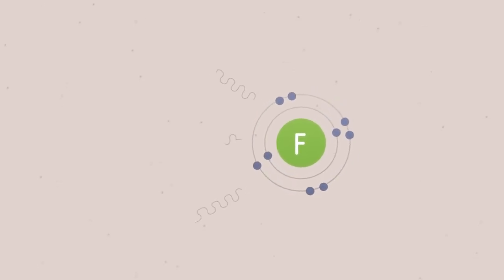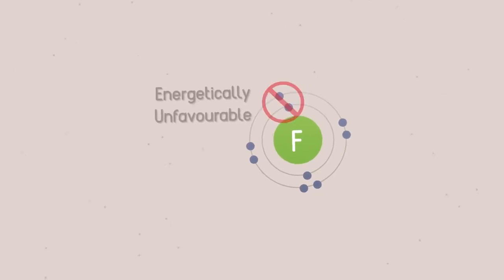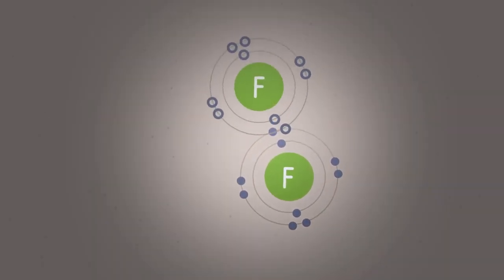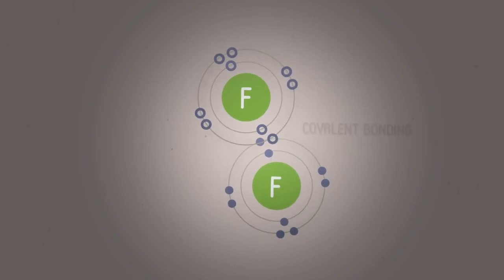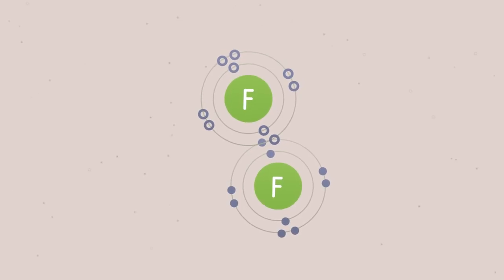They have shells of electrons that are normally half or more than half full of electrons. Since they have a strong attraction for a few additional electrons, it is energetically unfavourable for them to lose electrons. So they share electrons by overlapping orbitals. This makes a bonding orbital, or covalent bond, that contains two electrons.